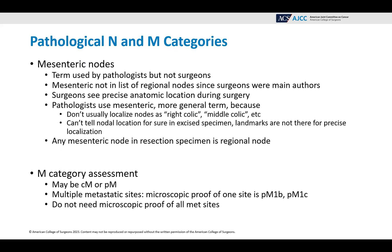For pathological N and M categories: mesenteric nodes is a question we get a lot. This is a term used by pathologists but not by surgeons. Mesenteric is not in the list of regional nodes since surgeons were the main authors of the chapter. Surgeons see the precise anatomic location during surgery. Pathologists use mesenteric, which is a more general term, because they don't usually localize nodes as right colic, middle colic, etc. — they can't tell the nodal location for sure in the excised specimen. The landmarks are not there for that precise localization. So any mesenteric node in a resection specimen would be considered a regional node.